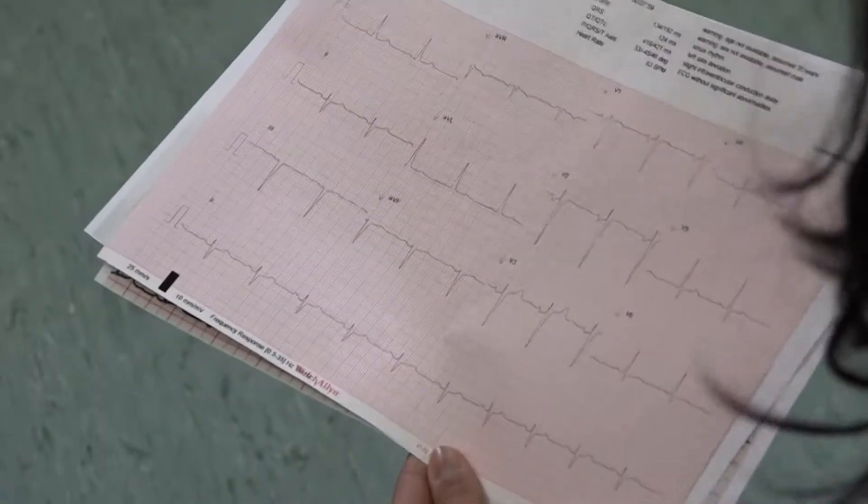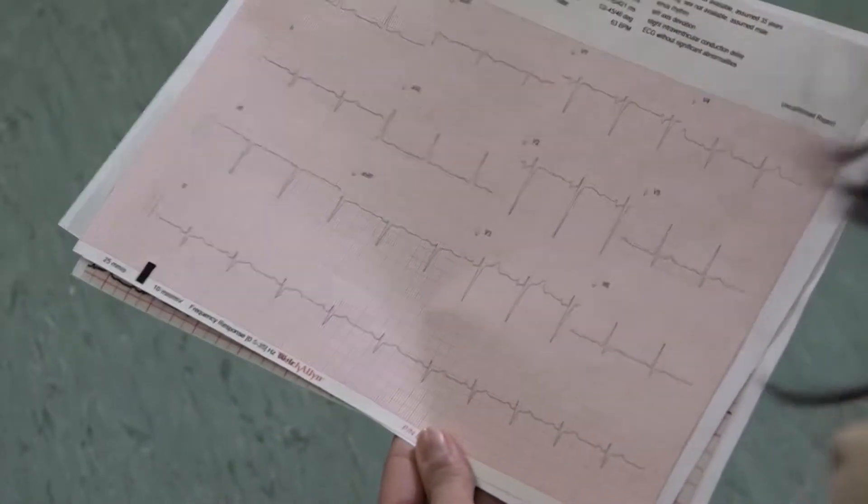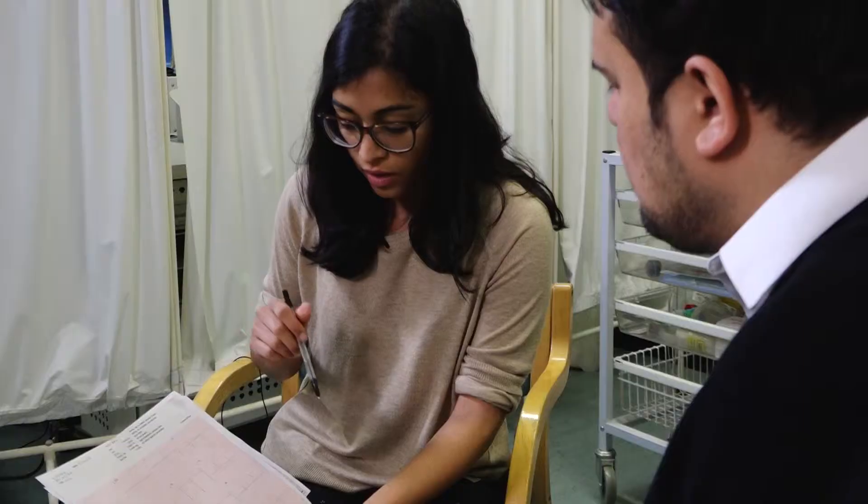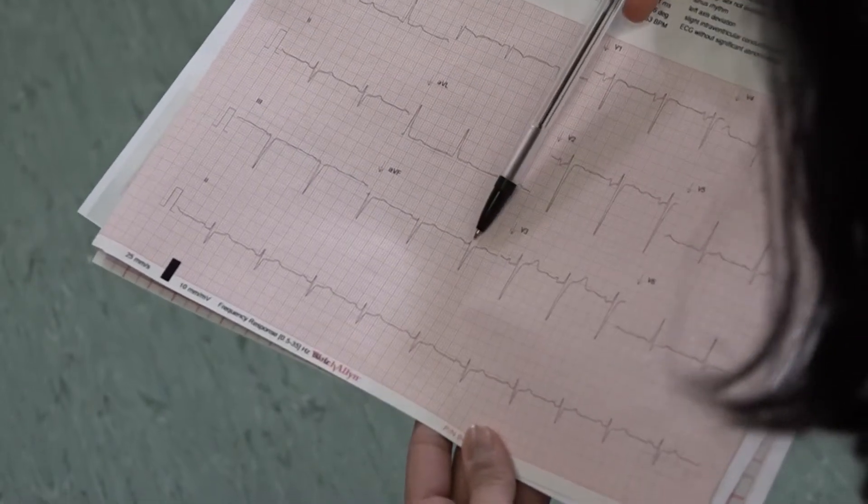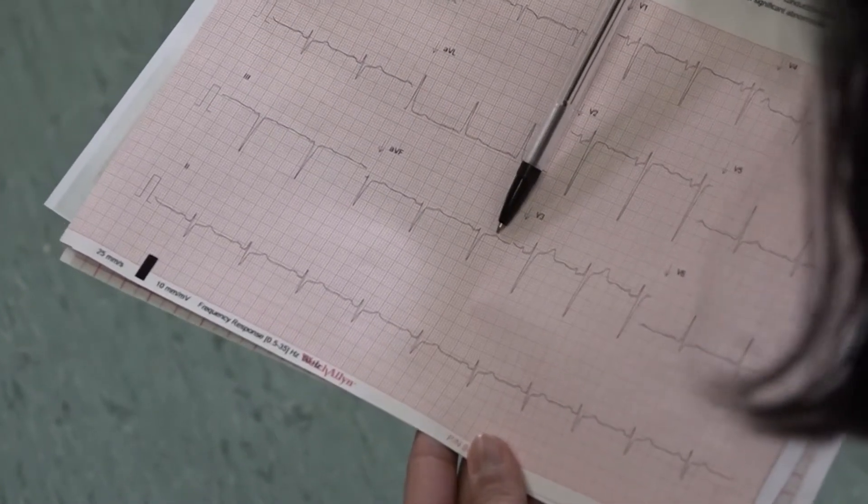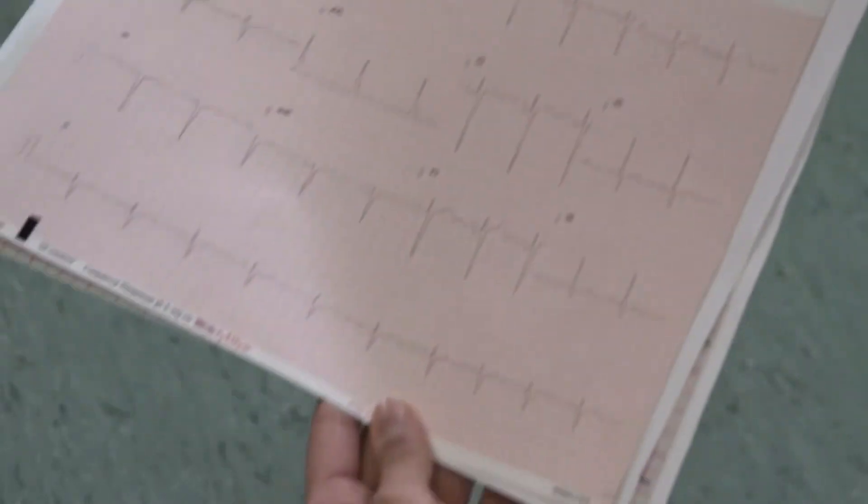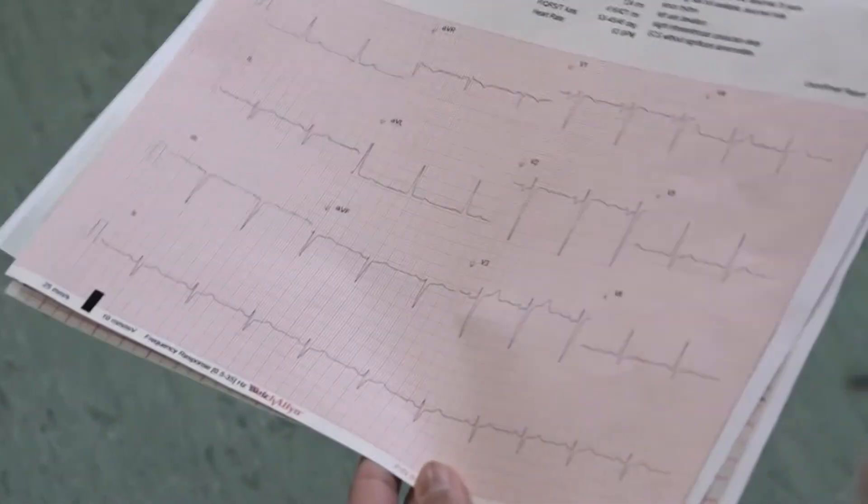In our original ECG there are no ST abnormalities, so we can move on and have a look at the T wave. The T wave, you want to look and see if it's abnormally large or abnormally small. You might also want to look at the interval between the Q wave and the T wave. If that interval is prolonged, you'll want to investigate causes for why that might be the case.